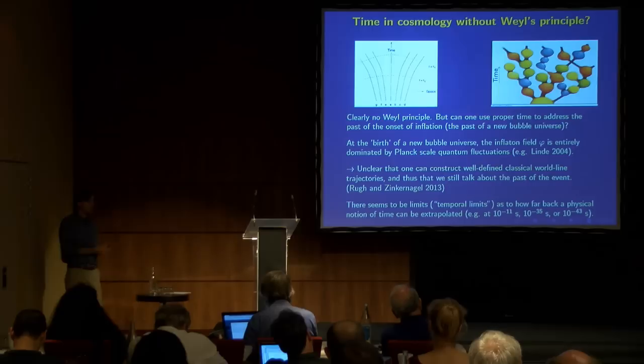But the question was, could we not then use proper time to address the past of the onset of inflation, for instance? So we could think about, if we are this red bubble here, the onset of inflation would be down here in the black here, and we can think about, can we not use just a little proper time there to go back into the past of a new bubble universe? Well, I don't think that's that easy. At the birth, as far as I understand it, the birth of a new bubble universe, the inflaton field is entirely dominated by Planck-scale quantum fluctuations. That's what you can read, for instance, in Linde in 2004 and many other places. It's fluctuating wildly. And that means that the idea of trying to construct from the inflaton field some well-defined classical world line trajectory is not at all clear. And thus it's not clear that we can still talk about the past of that event. We try to discuss that in a paper in more detail in a recent paper with Ruh.